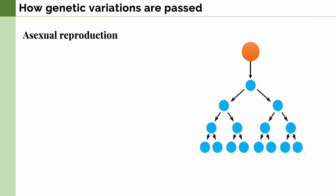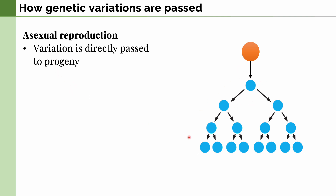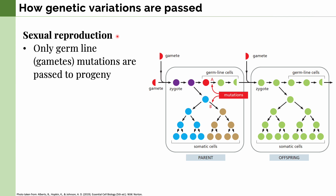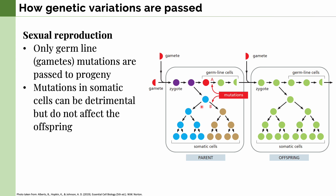Next, let's talk about how genetic variations are passed. This differs depending on the mode of reproduction. In organisms that undergo asexual reproduction, the variation is directly passed on to the organism's progeny. In organisms that use sexual reproduction, it's more complicated because only germline mutations — mutations in the gametes — are actually passed on to progeny. Mutations in other types of cells, called somatic cells, while they can be detrimental, do not affect the offspring in any way.